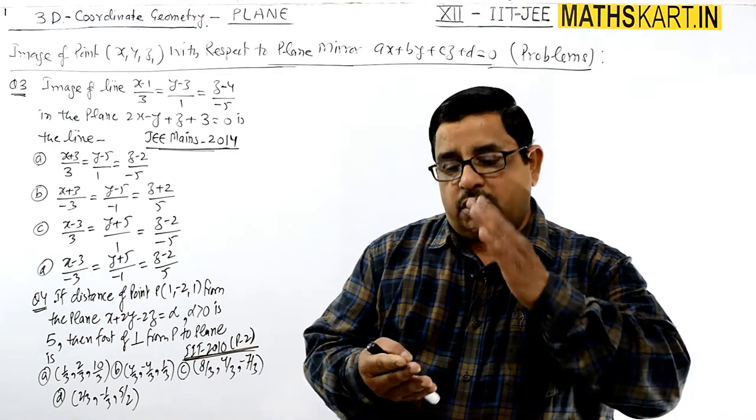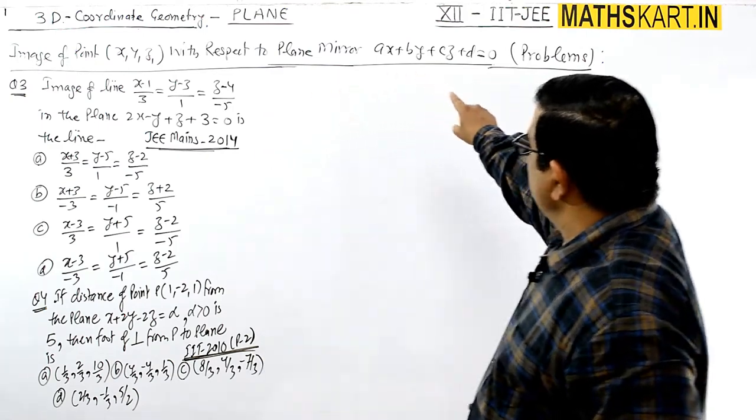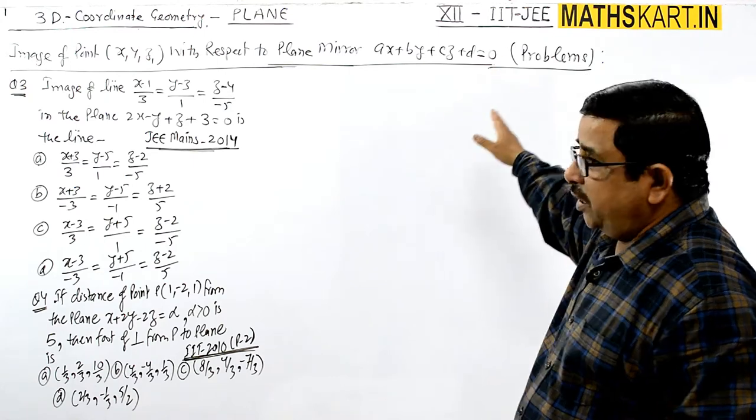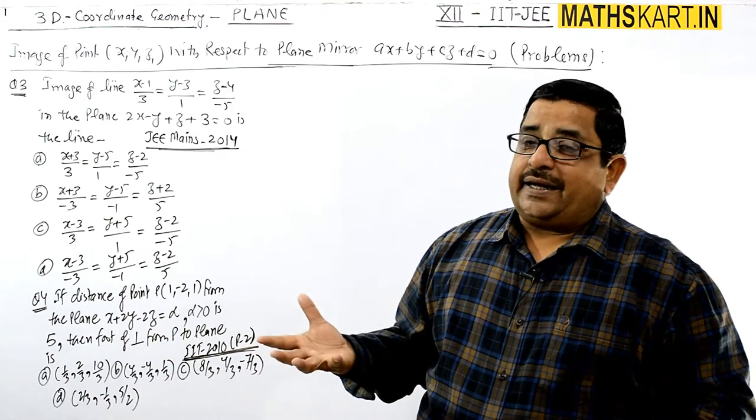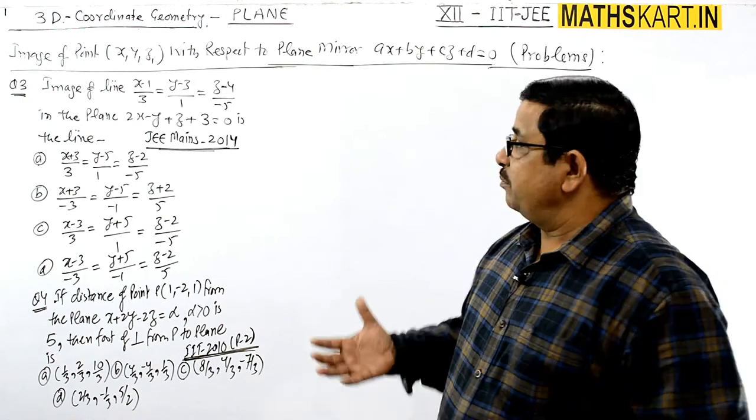Good morning friends. I am discussing the image of a point with respect to a plane, where the plane is given as ax + by + cz = d and it is acting like a mirror. The formula we already know, but this question involves finding the image of a line against the plane.